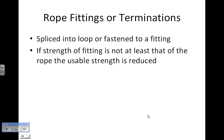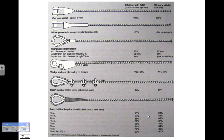Fittings and terminations can either be spliced into the loop or fastened to some kind of fitting. If the strength of the fitting is not at least that of the rope, the usable strength is reduced. This goes back to the principle that the maximum load any system can carry is based on its weakest part. Here are some examples of fittings.